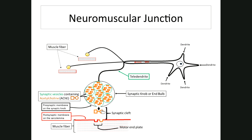Muscle spindles are sensory structures that monitor the tension of a muscle — this is the stretch reflex. If a muscle is stretched, stretch receptors fire via a sensory neuron to the spinal cord, an association neuron relays it to a motor neuron, and the muscle fibers contract. When the doctor taps under your kneecap with a hammer, that small stretch sets off a reflex causing your upper leg muscles to contract.